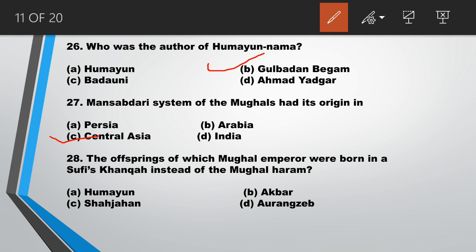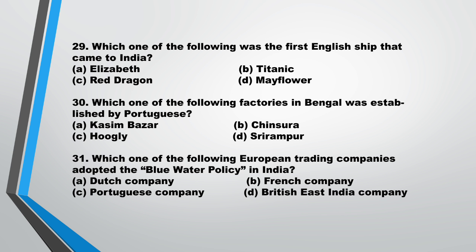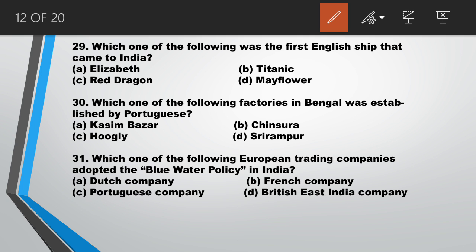Question number 28: the offsprings of which Mughal Emperor were born in a Sufi's house instead of the Mughal Harem? Answer is B, Akbar. Question number 29: which one of the following was the first English ship that came to India? Answer is C, Red Dragon.